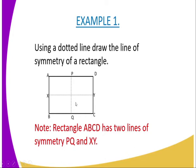And therefore, we can conclude and say rectangle ABCD has two lines of symmetry, that is PQ and XY, respectively.